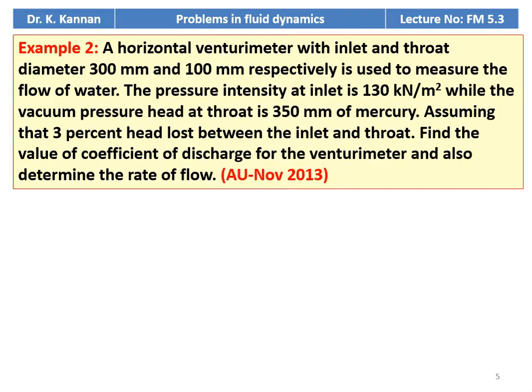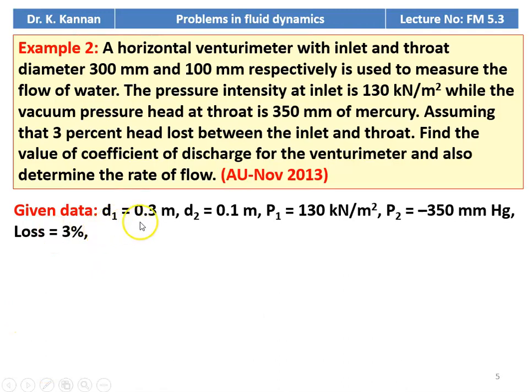Example number 2 from November 2013 question paper. A horizontal venturimeter with inlet diameter 300 millimeter and throat diameter 100 millimeter is used to measure the flow of water. The pressure intensity at the inlet is 130 kilonewton per meter square, while the vacuum pressure head at the throat is 350 millimeter of mercury. Assuming 3 percent head loss between the inlet and throat, find the coefficient of discharge for the venturimeter and also determine the rate of flow.